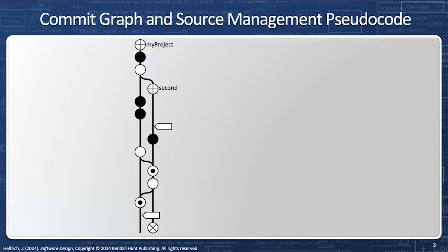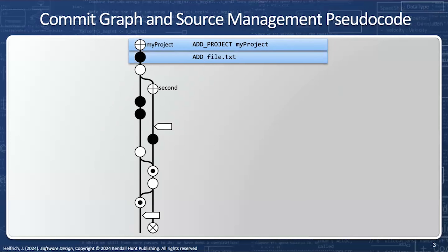So let's take a look at this commit graph. I want 'add project my_project' — this means I want to add a project called my_project. Then I want to add file.txt. Any kind of change is a black circle in a commit graph. I want to add a branch, and I'm going to call this one 'second'. Notice how it comes from the root, or my_project. At this point in time, my_project is still the active branch.